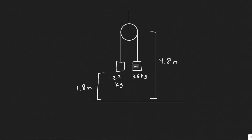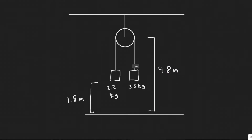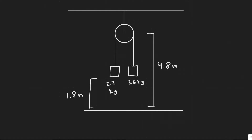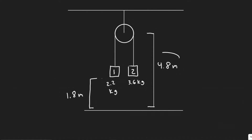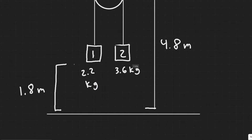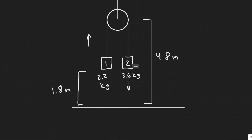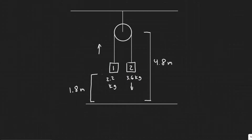In this problem, we first want to draw what's going on. They give us a diagram, and we have two masses — I'm going to refer to this one as 1 and this one as 2. We know both masses are 1.8 meters above the ground and the pulley is 4.8 meters above the ground. When the system is released, the heavier object goes down while the lighter object goes up, since the heavier one has a greater force pulling it down, and the tension in the cables pulls the lighter one up.